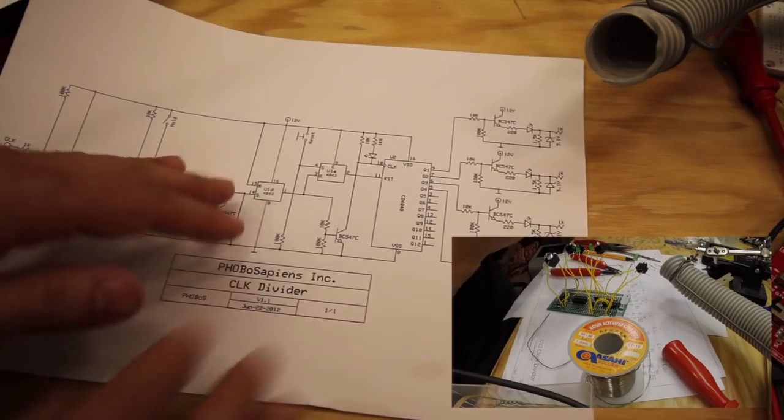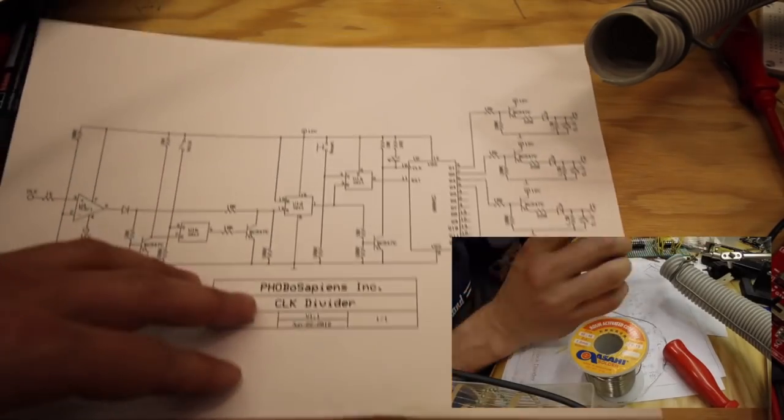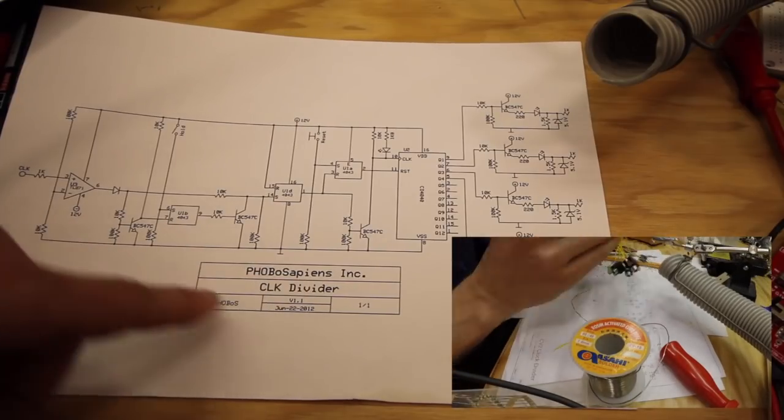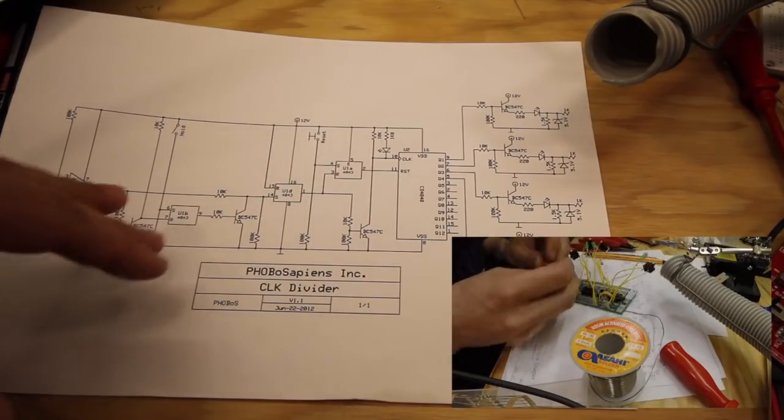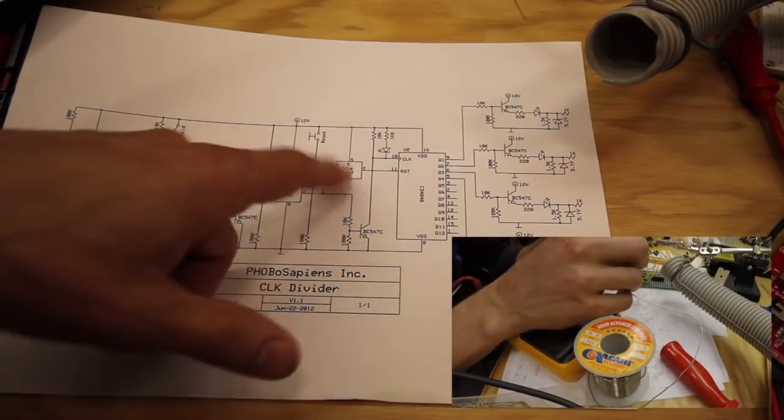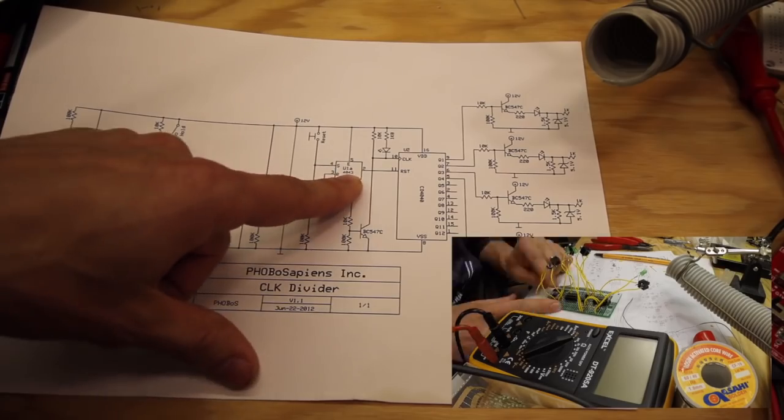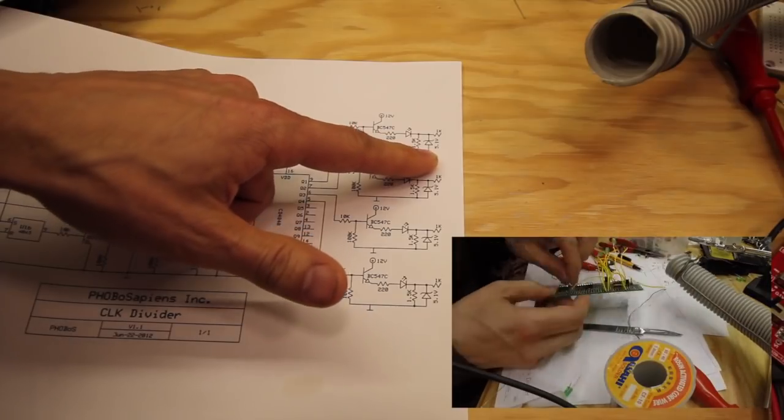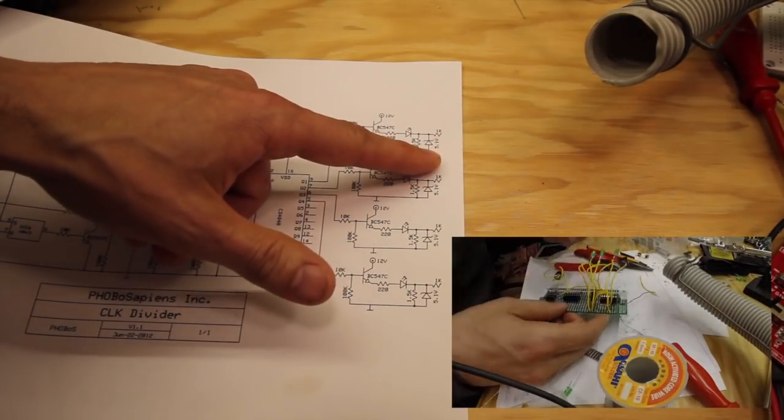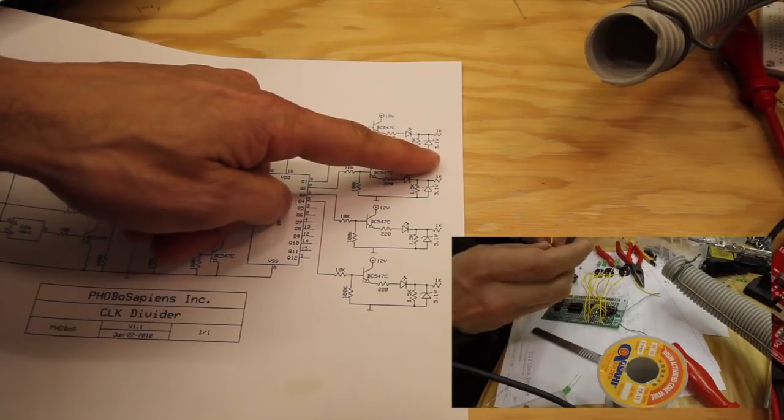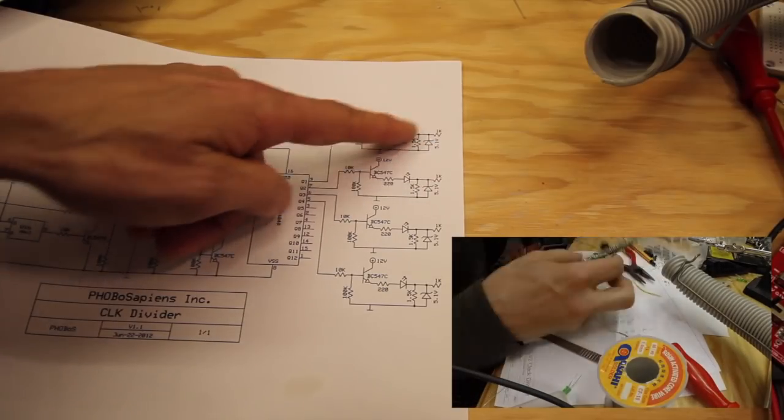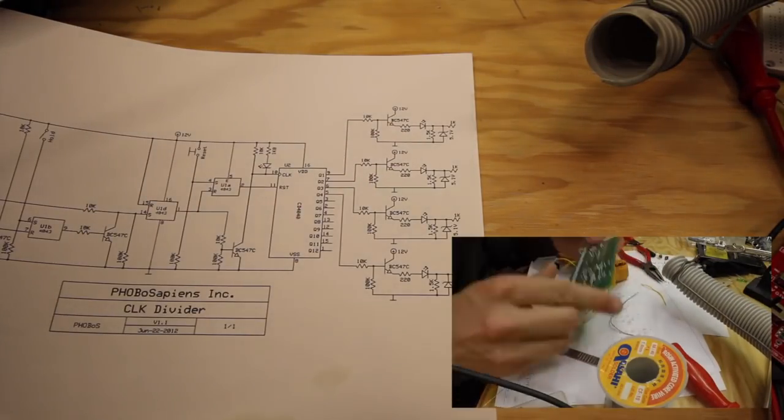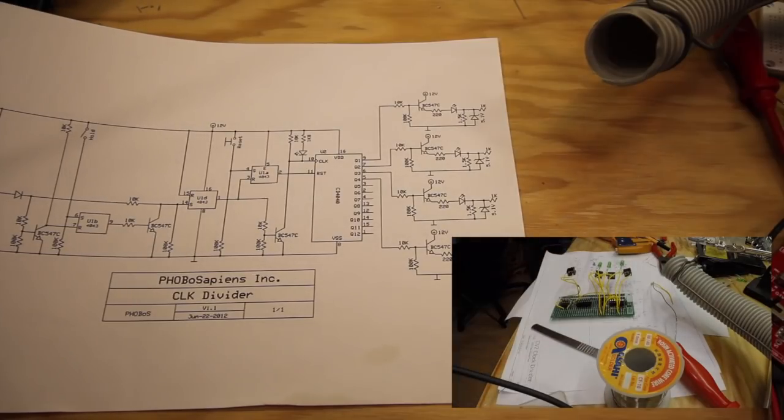And another quite simple one. This one would have been a good one also to make. This is the Phobosapiens clock divider. I don't know what these, he has a lot of flip-flops here in the beginning, and I don't know what those do. And then on the outputs he solved the 5 volt trigger output or gate output problem with a Zener diode of 5.1 volts. So that's also a nice solution. With that, let's look at the schematics that I actually built.